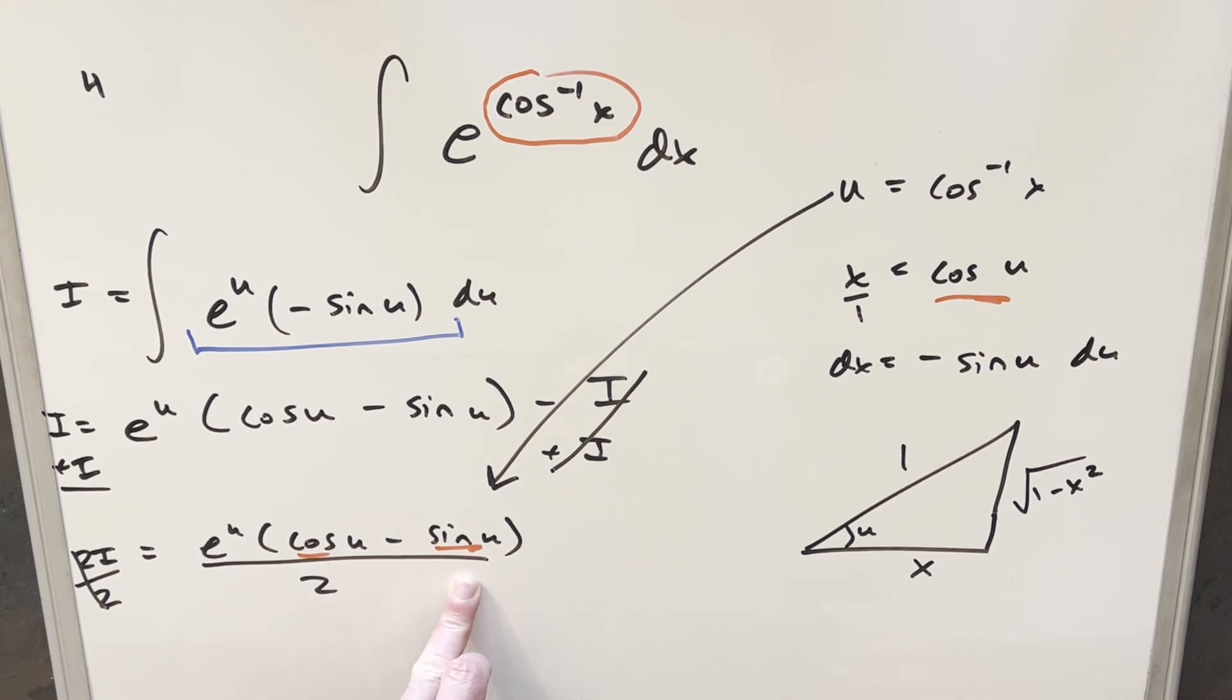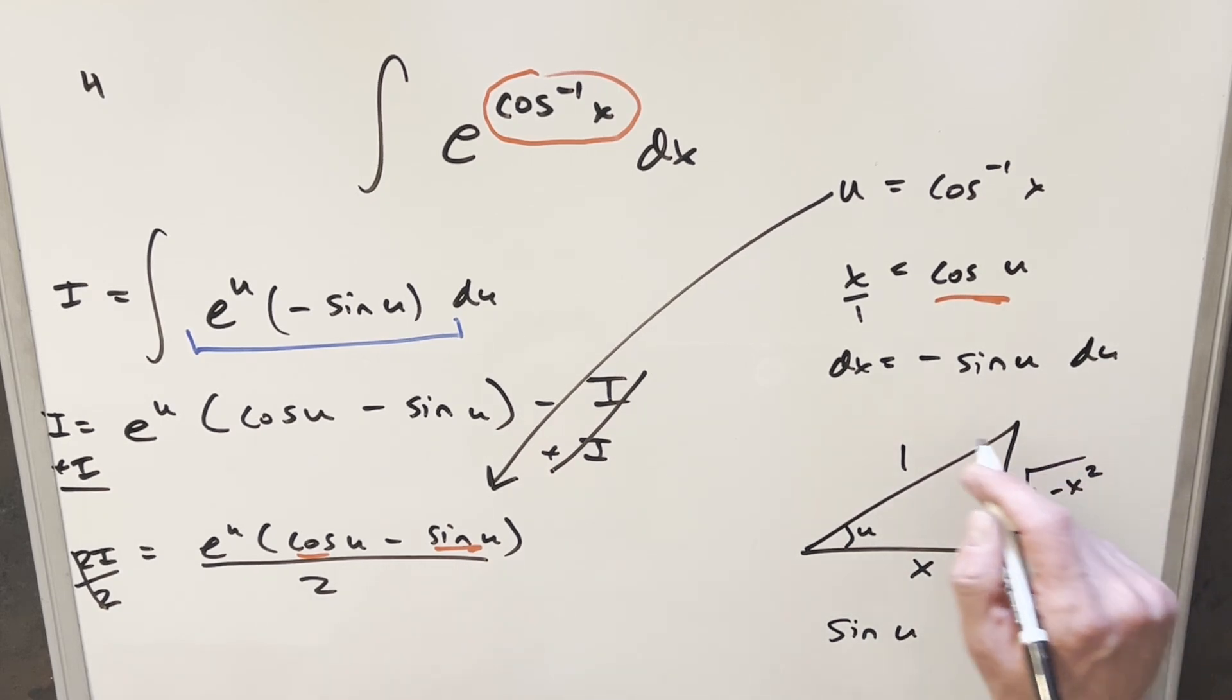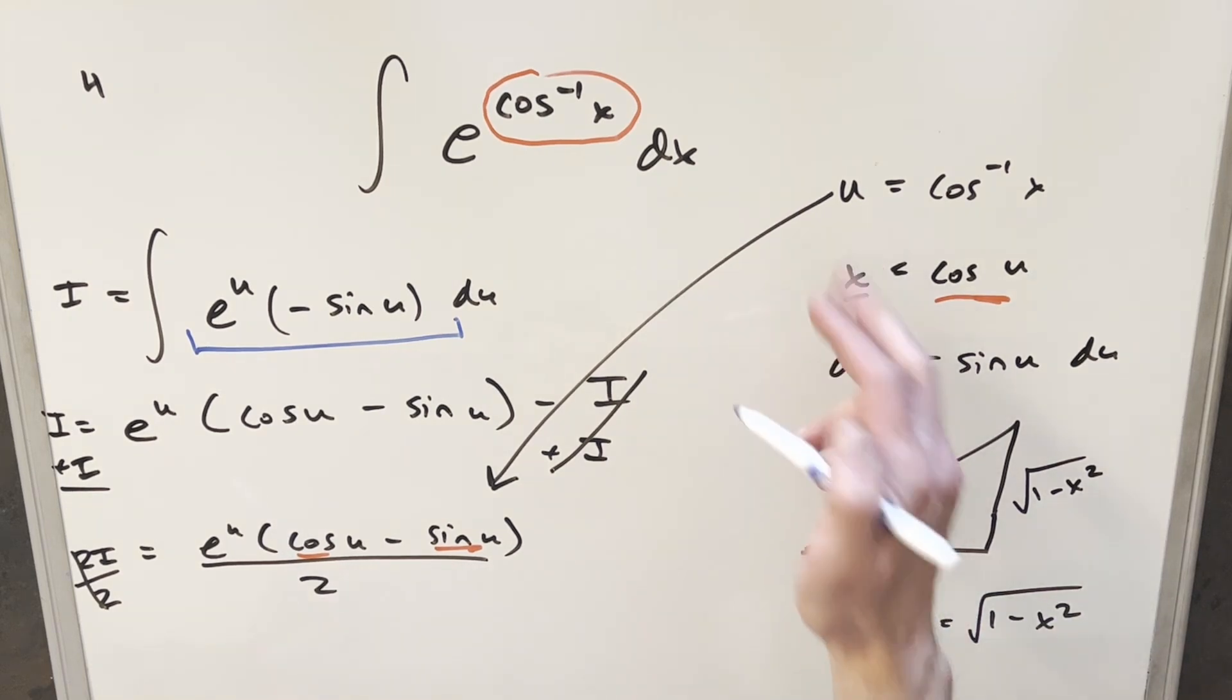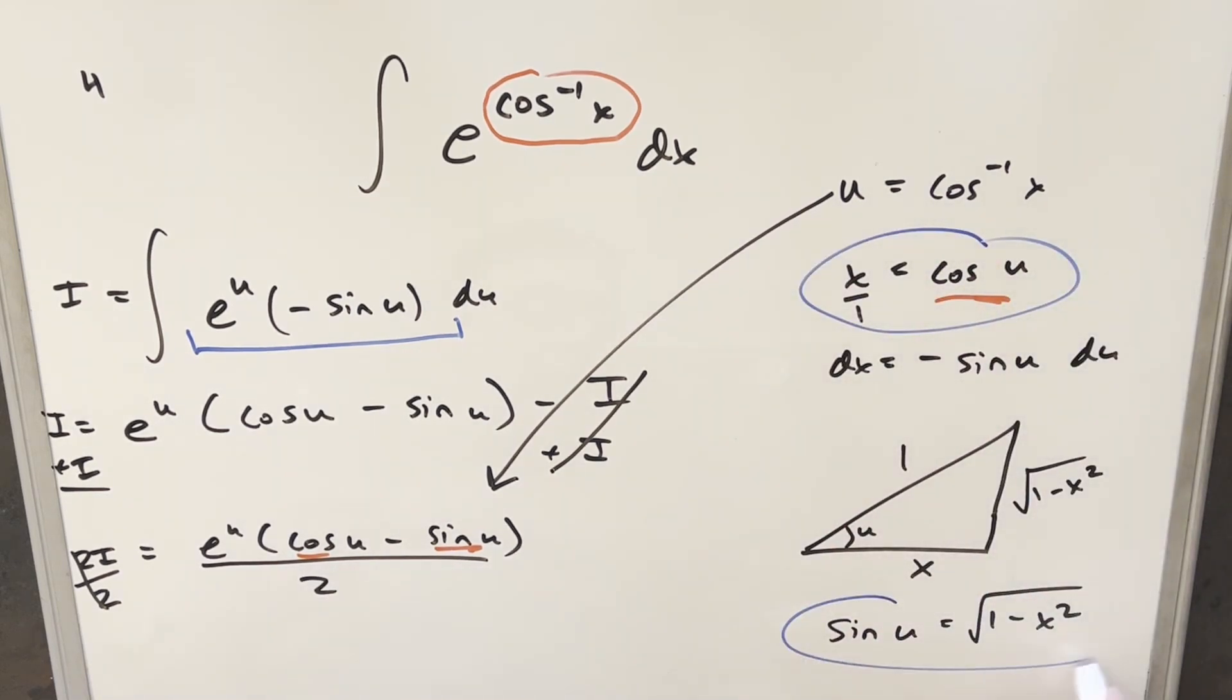So now I mentioned before what I want is a value for sine of u. So for sine of u, we just want opposite over hypotenuse, and that's just going to be square root of 1 minus x squared over 1. I can just write this as square root of 1 minus x squared. And so now that I have u, cosine u, and sine u, I'm ready to back substitute to finish this thing.